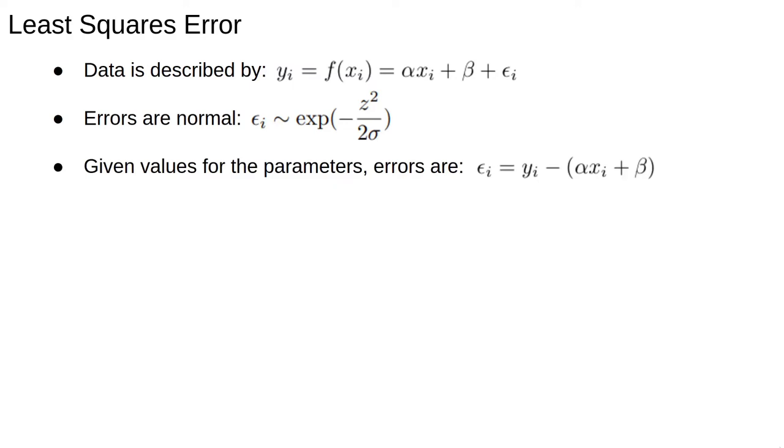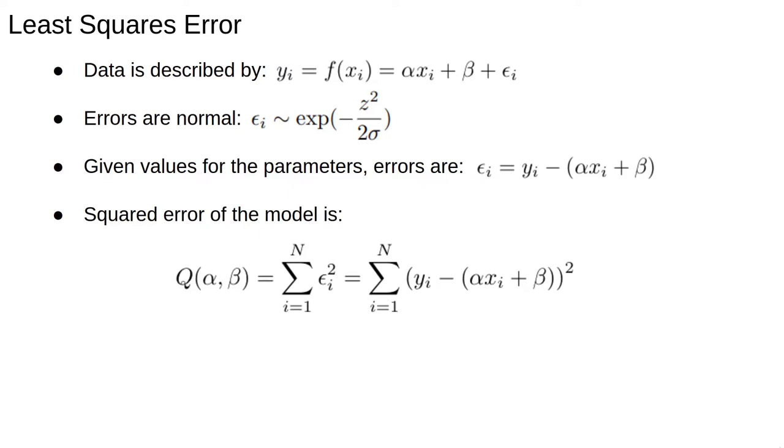Given some values for the parameters we can calculate the errors. ε_i = y_i - (αx_i + β). The squared error of the model is then Q(α,β), which is the sum over all data points of the squared epsilons. The goal of least squares fitting is to find the values of alpha and beta which minimize this function.